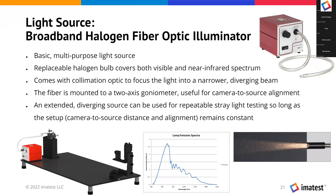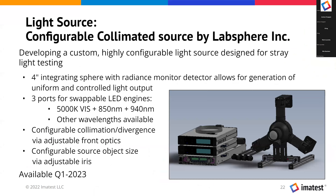In general you can use diverging sources for repeatable stray light testing, as long as your setup remains constant — meaning the distance from the camera to the source and the alignment of the camera within the beam of light must remain constant. 只要是很稳定可控、精确位置还有对齐的光源都是可以的，而且最重要就是说它是可以可控并且可以很好地被重复来做测试。This is a setup we're already offering to sell, but we're also developing a new light source.